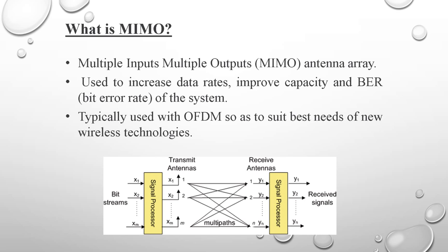To understand what channel state information is, we first need to understand MIMO — multiple input multiple output antenna arrays. This is the new configuration of antennas in new wireless systems. Instead of having only one antenna to send and receive in an omnidirectional way, new wireless LAN cards started to have multiple physical antennas, which are used to increase data rate, improve capacity, and reduce bit error rate.